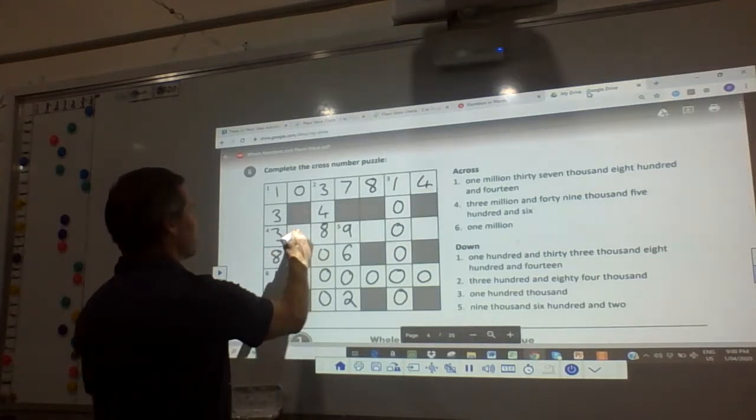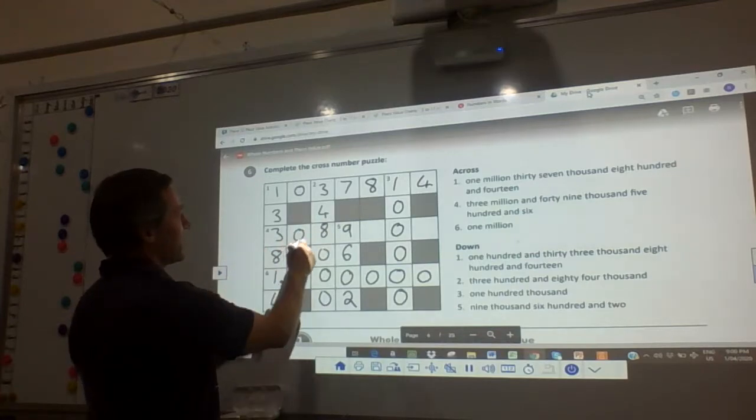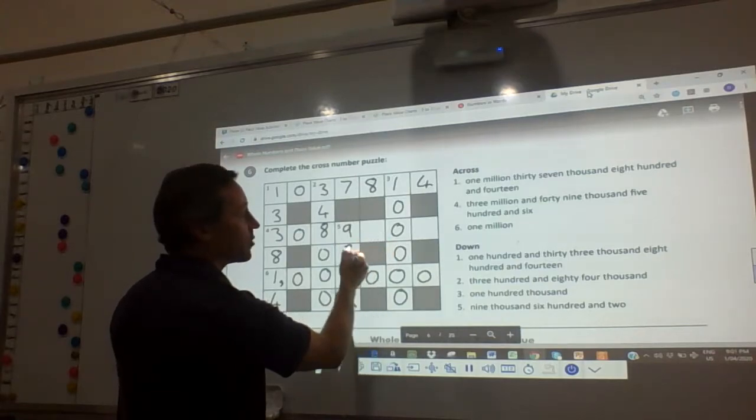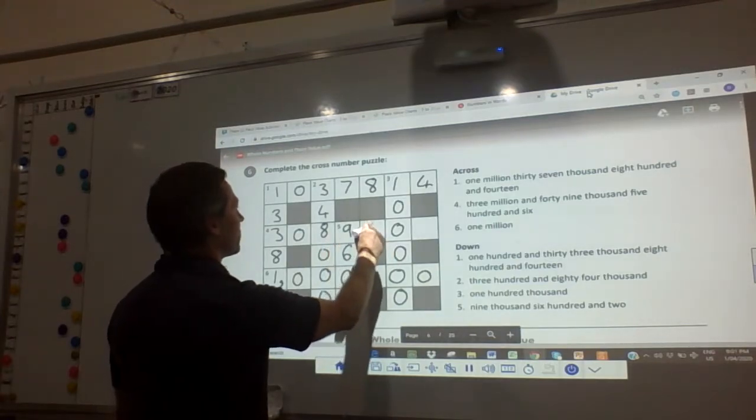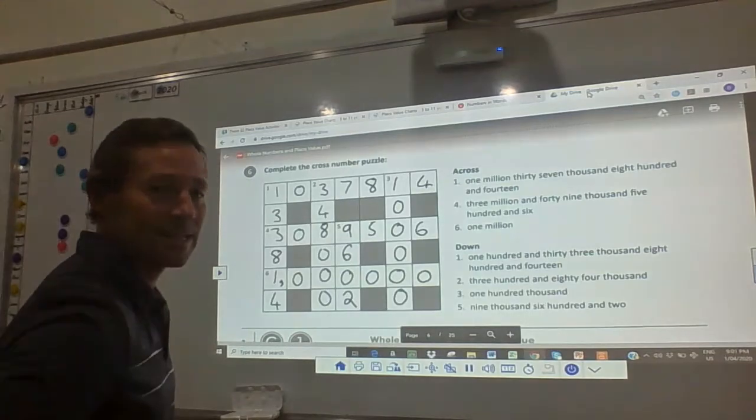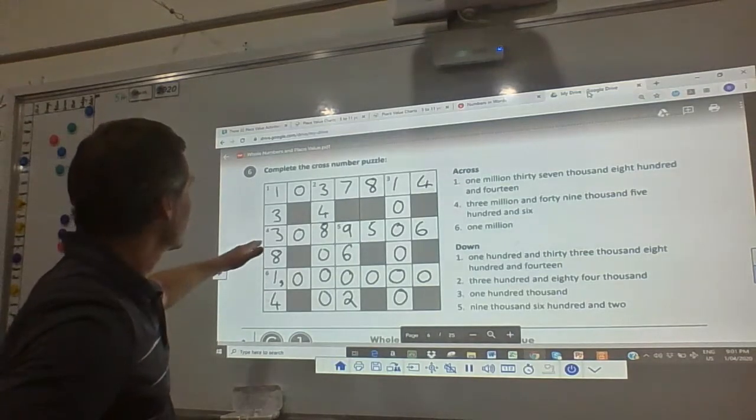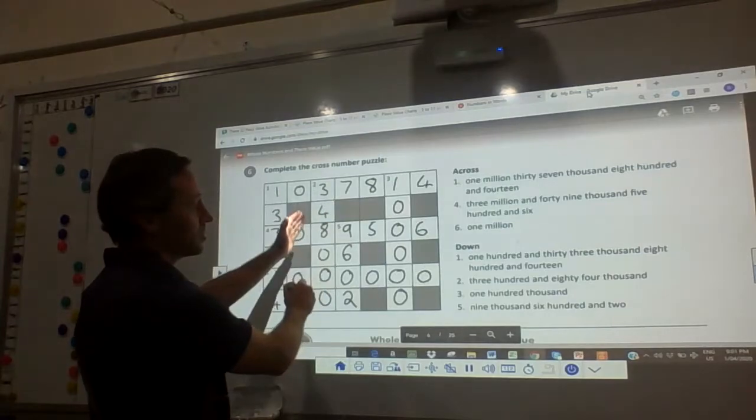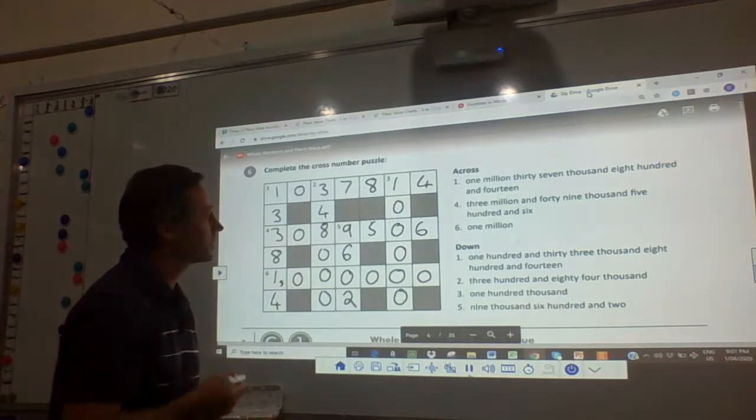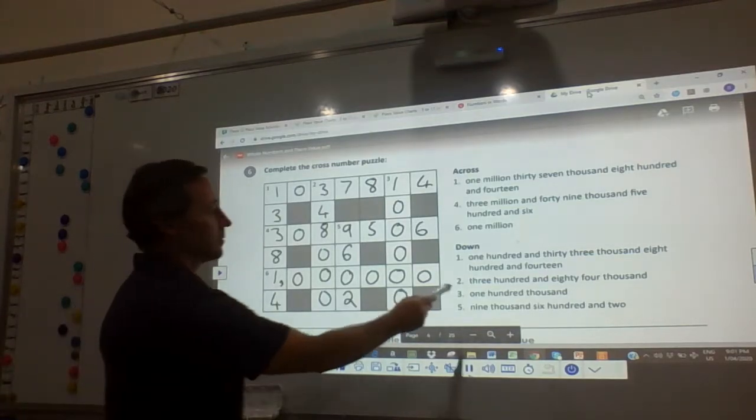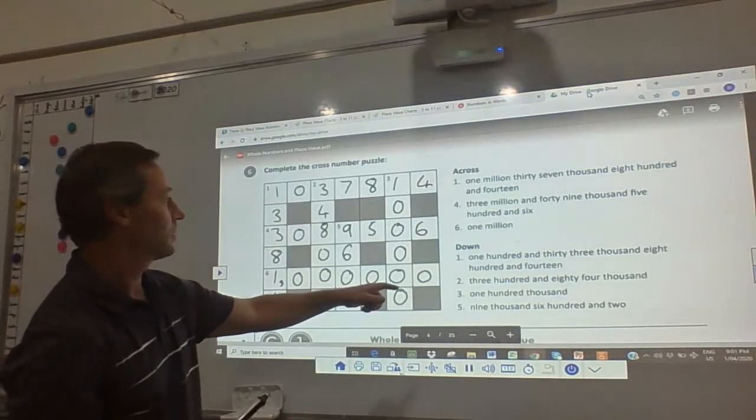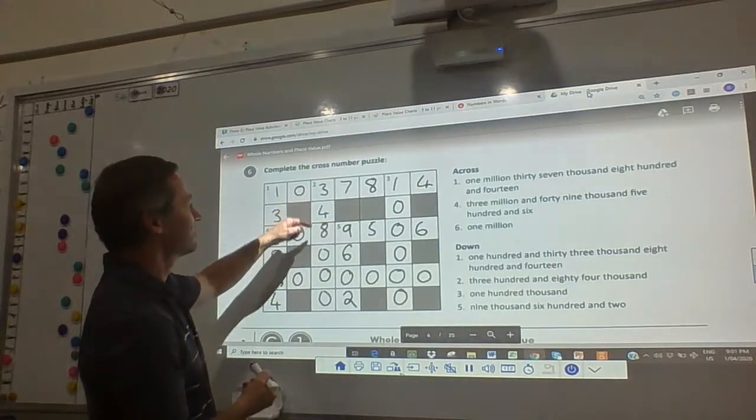Three million and 49, so something's gone wrong here. 3 million and 49,506. That would be 106. So Mr. Lear has made a mistake somewhere. Where has he made that mistake? So he's going to have to go back to number two. So number two says 384,000. What do you think Mr. Lear has done wrong?